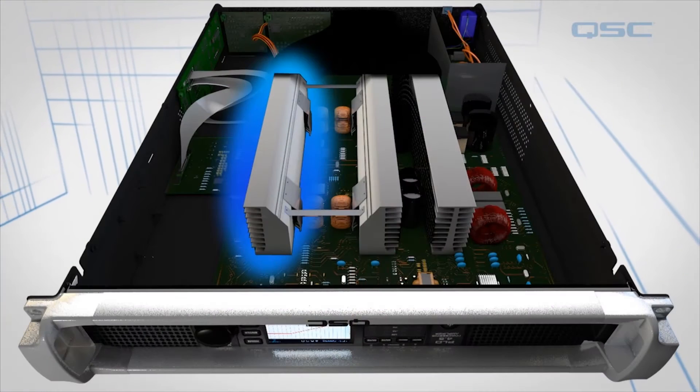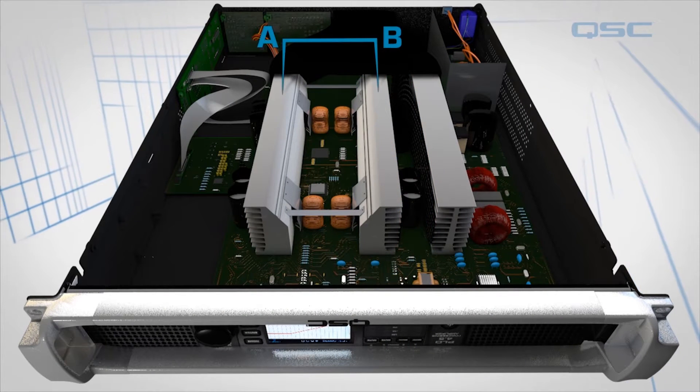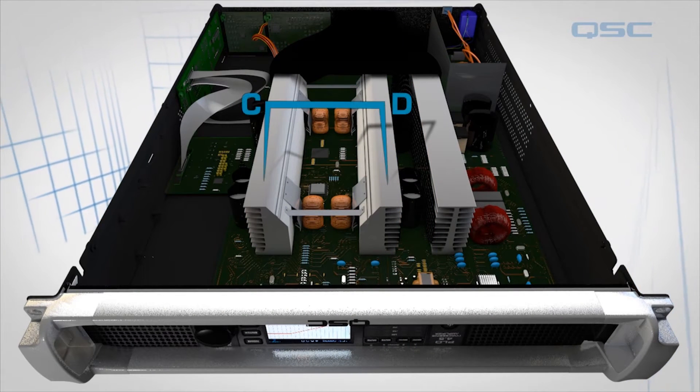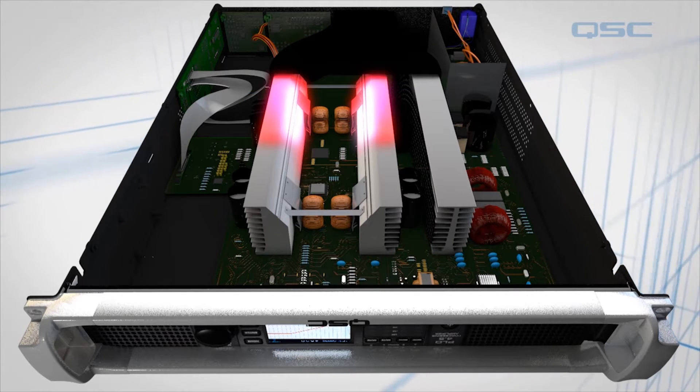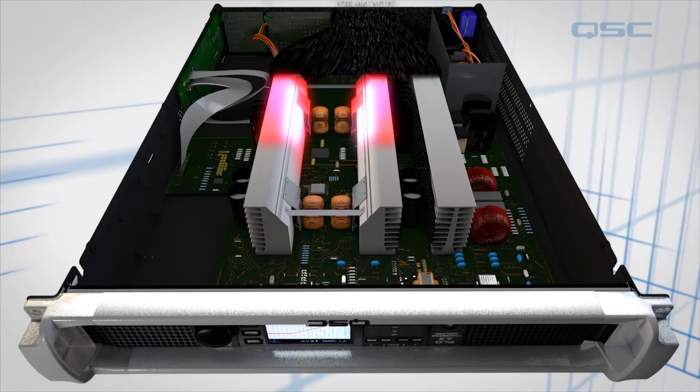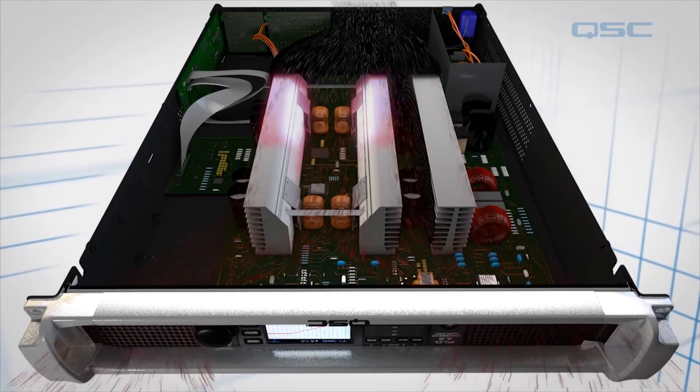Each pair of channels shares a heat sink. You'll notice that Channel A and B and Channel C and D are on opposite heat sinks. This is to spread out the heat as much as possible when they're used simultaneously, reducing the overall thermal load of the system.